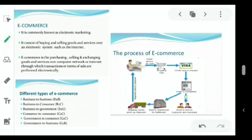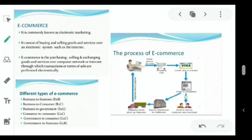Consumer to Consumer is also there — you can post an advertisement of a product if you want to sell something. There are sites where you can buy or sell by posting an ad of your product. Government to Consumer is also there — you can see where Khadi is sold; they are selling the products.